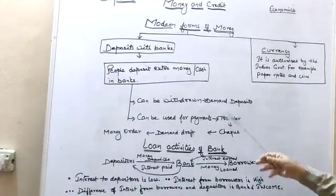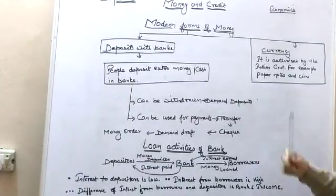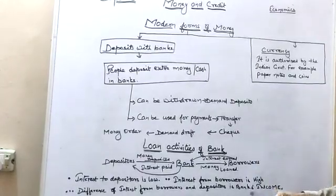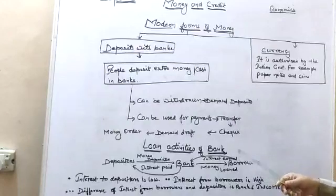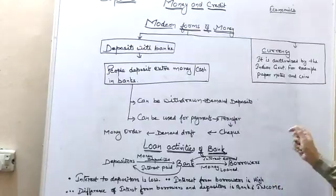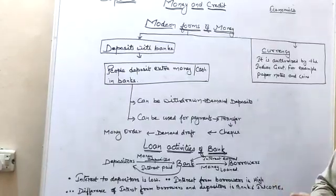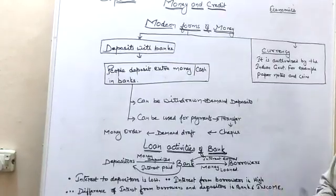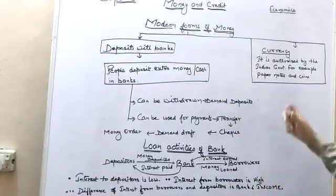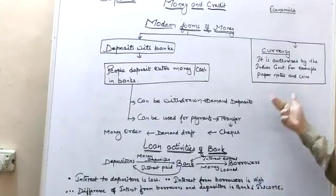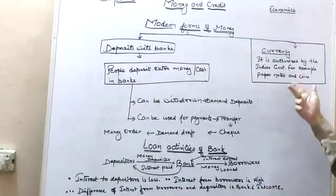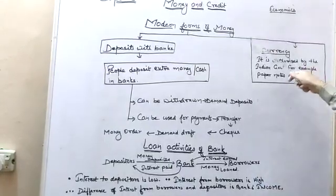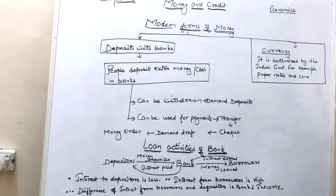For example, 10 rupee coins, 2 rupee coins, 1 rupee coins, 5 rupee coins — you have seen these. And paper money: 100 rupee notes, 50 rupee notes, 20 rupee notes — you have seen these as well. And nowadays, due to modernity, we have ATM cards, credit cards, and debit cards. These are modern forms of currency.